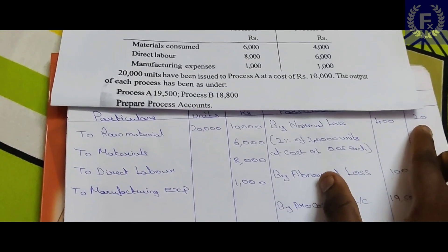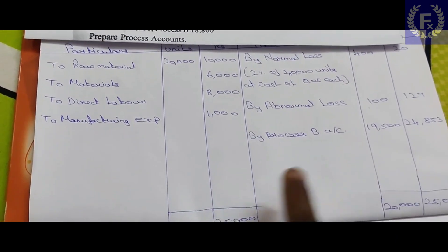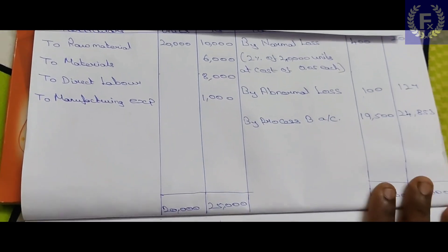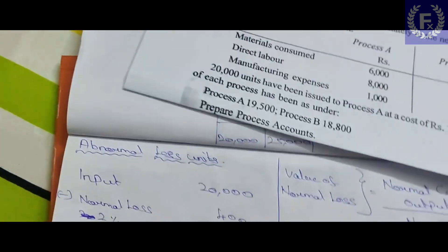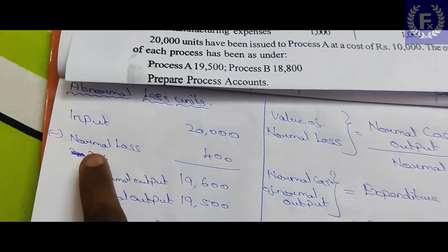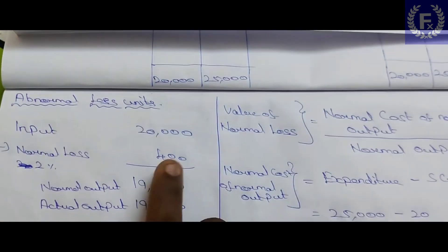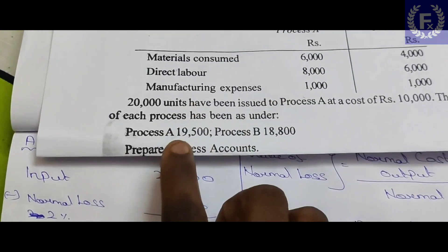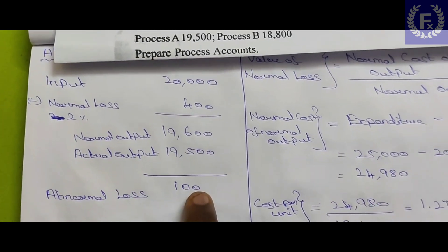The scrap value of the 400 units normal loss is 400 × 5/100 = 20. Now let's find the abnormal loss. Input is 20,000 units. Normal loss is 400 units. So, expected normal output is 20,000 minus 400 = 19,600 units. The actual output is 19,500 units. Therefore, abnormal loss = 19,600 minus 19,500 = 100 units.